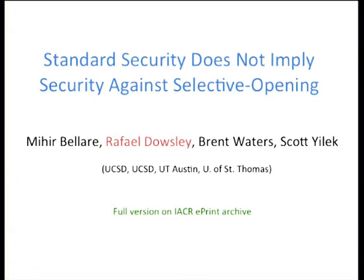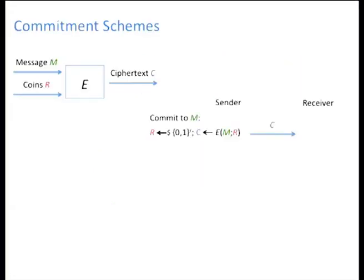A commitment scheme for us will be given by a single polynomial time algorithm E. It takes as input some message M and some coins R, and produces some ciphertext C. In terms of usage, there are two phases. To commit to a message M, the sender picks some coins and produces the ciphertext. Later on, he can open the message by sending the message and the randomness to the receiver.